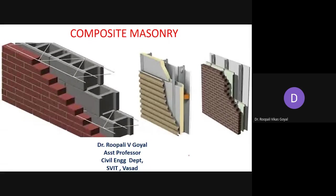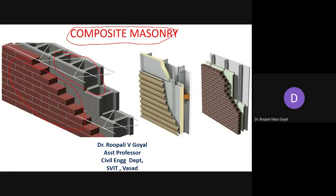Hello students, today we are going to discuss composite masonry. You have already studied stone masonry as well as brick masonry. Now we are talking about composite masonry — meaning it is a combination of two types of masonry or two types of material. Here you can see the facing is with brick wall while the backing is with stone masonry. When such a combination is adopted to have good appearance on the facing side, it is called composite masonry.